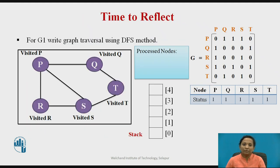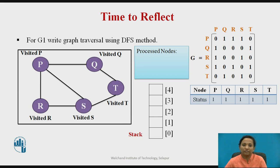Now it is time to reflect on what we have learnt. Traverse the given graph G1 with nodes P, Q, R, S, T by following the DFS algorithm. You can pause the video here and determine the traversal sequence for graph G1 yourself.